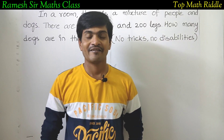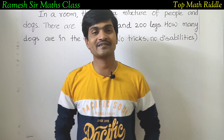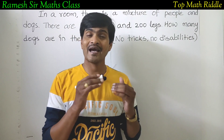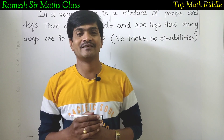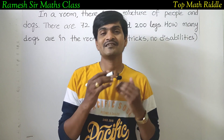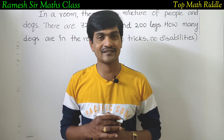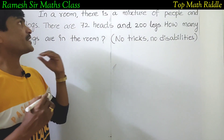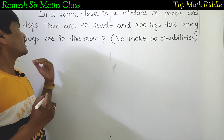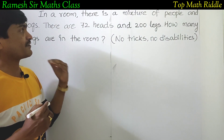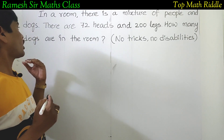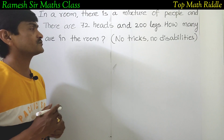Hi everyone, welcome back to Rameshaw Math class. This is an interesting math puzzle or algebra question that we will discuss. In a room, there is a mixture of pupils and dogs. There are 72 heads and 200 legs. How many dogs are in the room?